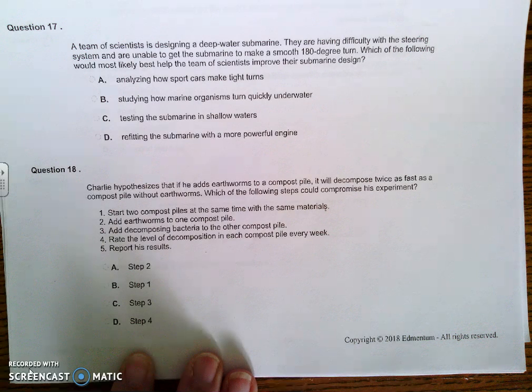Answer for number 18 is C. Step 3 would compromise the experiment by introducing a second variable, in this case decomposing bacteria. He has invalidated the control group of the experiment. Experiments should only have one variable to be valid.